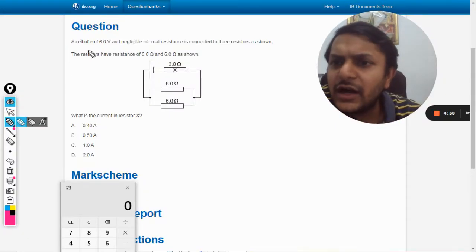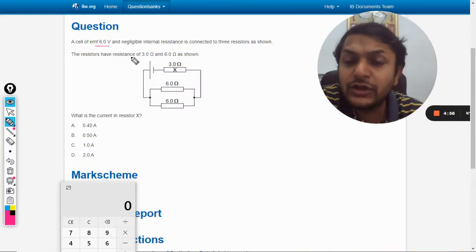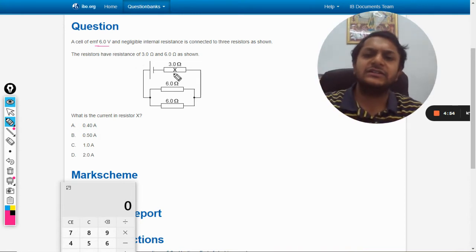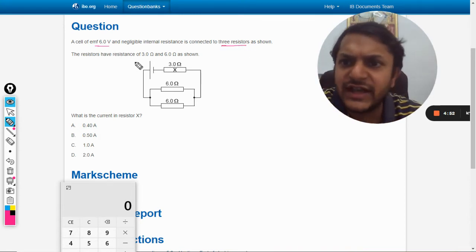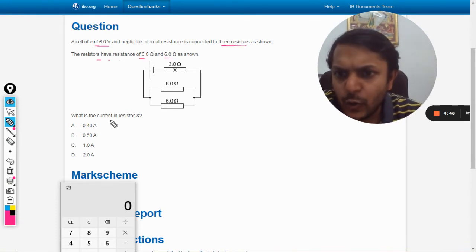Okay dear students, let us start. A cell of EMF 6 volt and negligible internal resistance is connected to three resistors as shown. The resistors have resistances 3 ohms and 6 ohms respectively. What is the current in the resistor X?